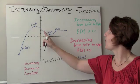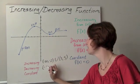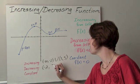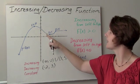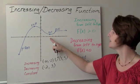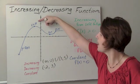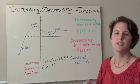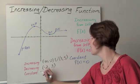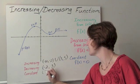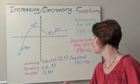We are decreasing only on the interval from negative 2 to 3. We're decreasing from x values of negative 2 to 3. Notice that the y values went from a positive 3 down to a positive 1, so it decreased. And we are constant on the interval from positive 5 to infinity.